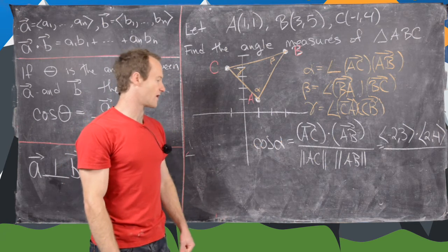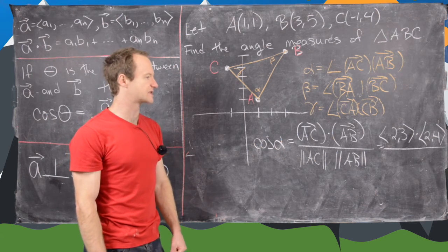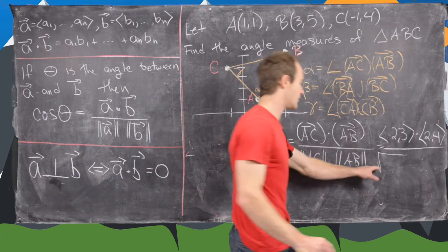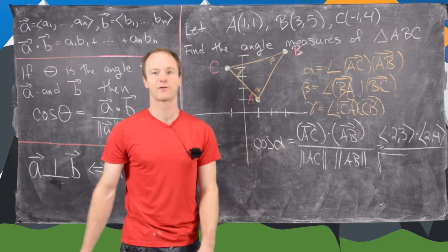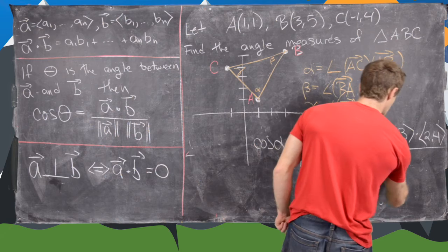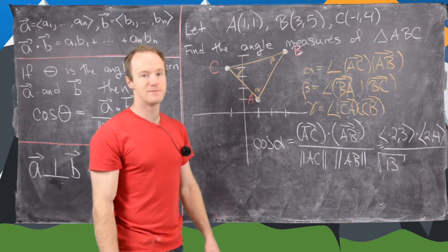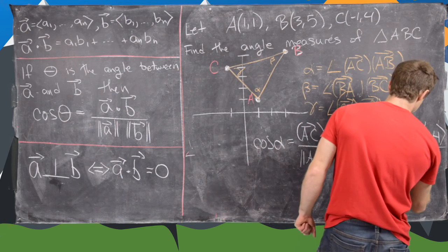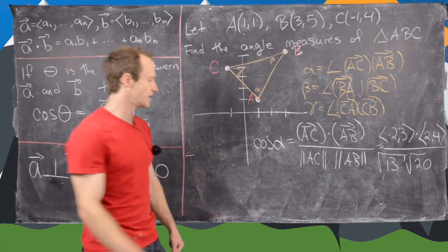And then we need to find the length of those vectors. So we'll use the formula that the length of a vector is the square root of the sum of the squares of its components. So that's going to be the length of AC will be the square root of 2 squared plus 3 squared. So that's 4 plus 9, which is 13. And then the length of AB will be the square root of 2 squared plus 4 squared. So that will be 4 plus 16, which is the square root of 20.